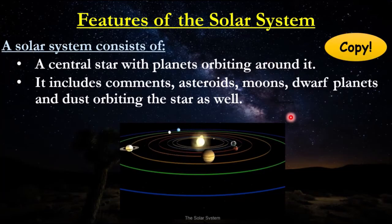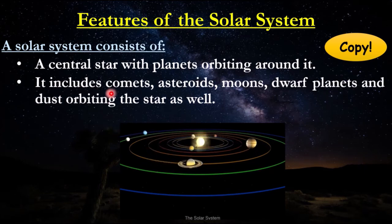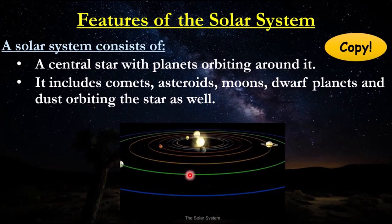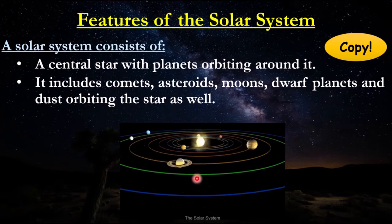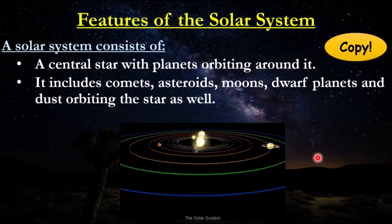In terms of the actual features of a solar system, you need a central star with planets orbiting around it, and it needs to include comets, asteroids, moons, dwarf planets, and basic dust from the stars. In our solar system we have the planets orbiting around the central Sun, an asteroid belt, moons orbiting around Jupiter, Earth, and Saturn, and dwarf planets like Pluto. Those are the kind of features you'd find in a solar system. As you can see, we're going from small to big, but let's go back a bit smaller and look at the Sun.